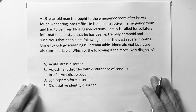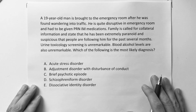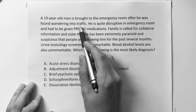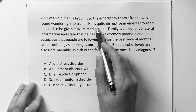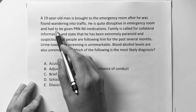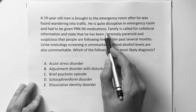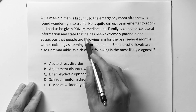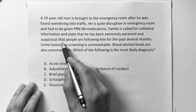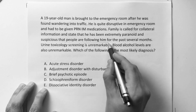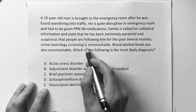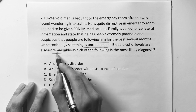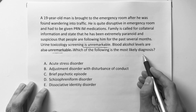This is about the psychotic and mood disorders. A 19-year-old man is brought to the emergency room after he was found wandering in traffic. He is quite disruptive in the ER and had to be given PRN intramuscular medications. Family has called for collateral information and states that he has been extremely paranoid and suspicious that people are following him for the past several months. Urine toxicology screen is unremarkable. Blood alcohol levels are unremarkable. Which of the following is the most likely diagnosis?